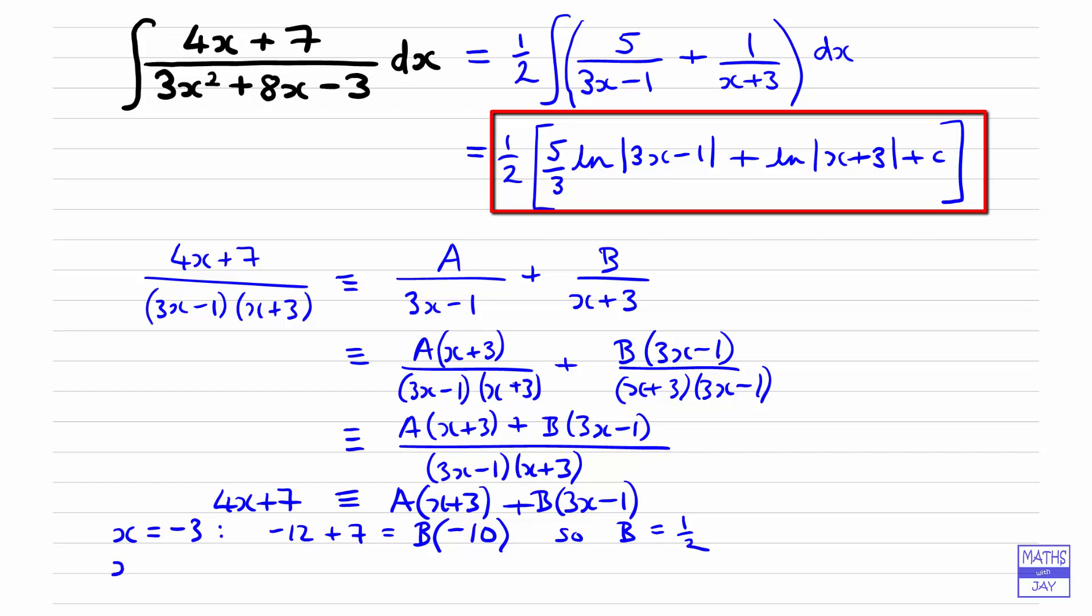And then we want to substitute in a value so that we can find A, so this time we're zeroizing the coefficient of B, so 3x minus 1 is going to be zero, so we're going to make x equal to a third. So then the left hand side will be 4 thirds plus 7, and that will be equal to A times a third plus 3, and then we could multiply through by 3, so that would give us that 4 plus 21 equals A times 1 plus 9, so that we've got 25 is A times 10, so A is 5 over 2.